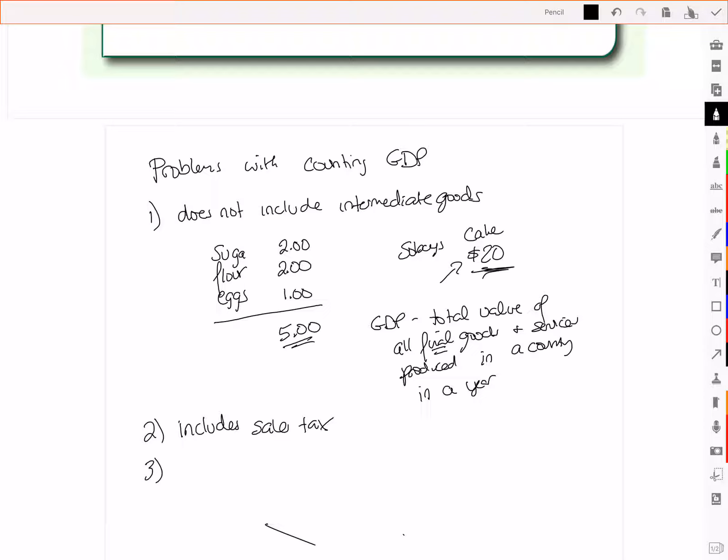Another problem with counting GDP is that it does not reflect a change in the quality of goods. So when we look at GDP as a number, we look at the $2 trillion in terms of the goods that we make and sell, it doesn't tell you about the quality of goods.